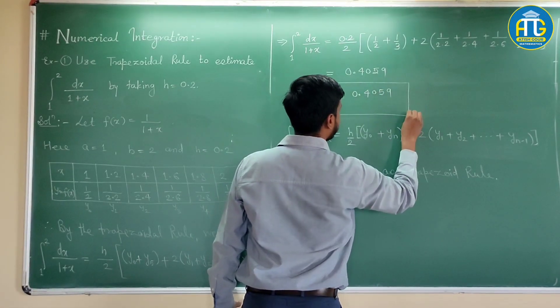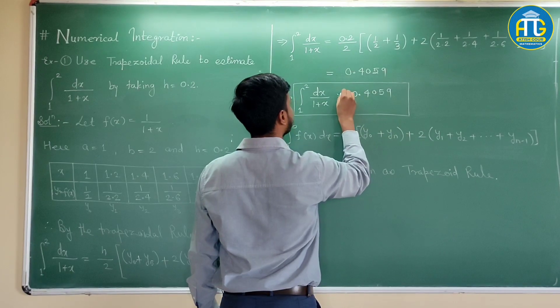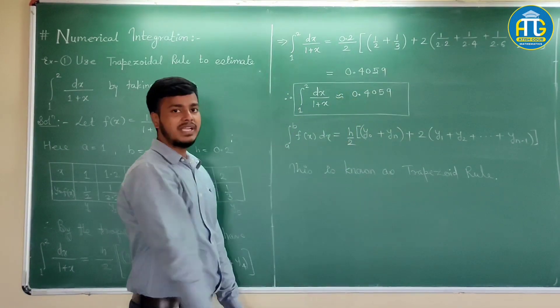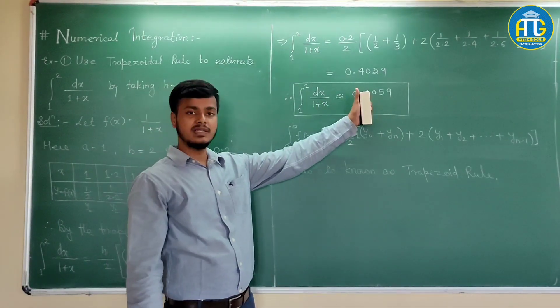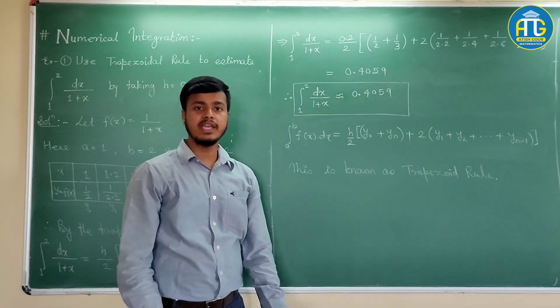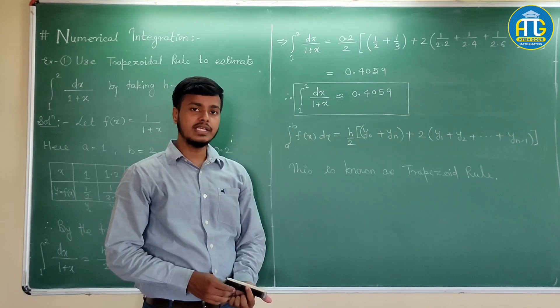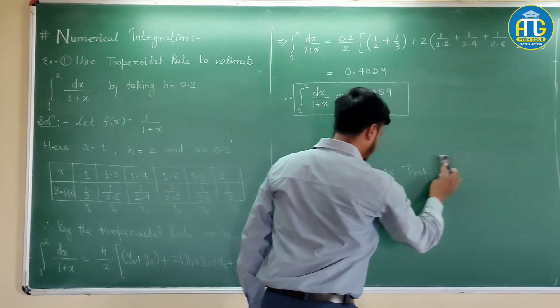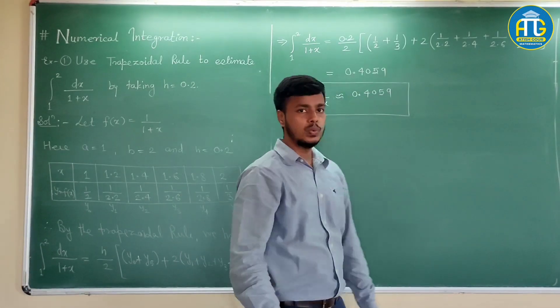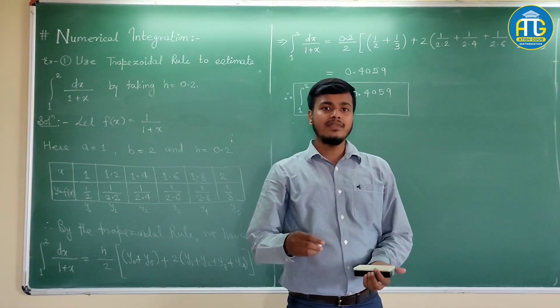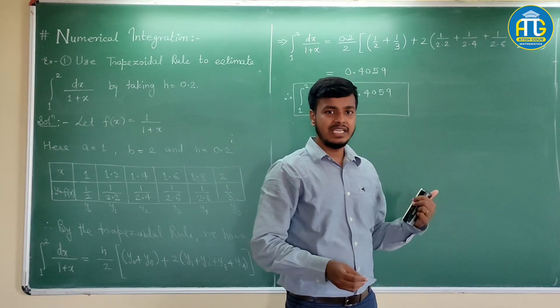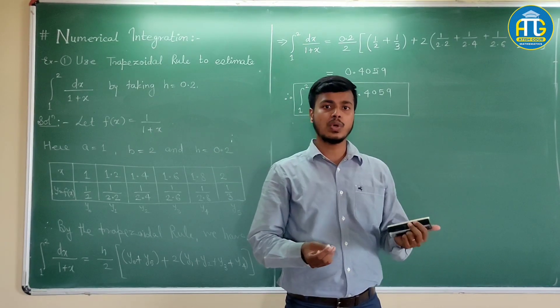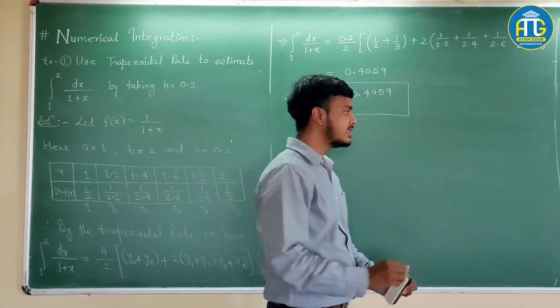One can write with the help of, this is approximate answer. So, approximately 0.4059 you can write. Like this, all the problems can be solved on trapezoidal rule. One different variety of problem we can take. I just give you the hint and you can try to solve that problem.